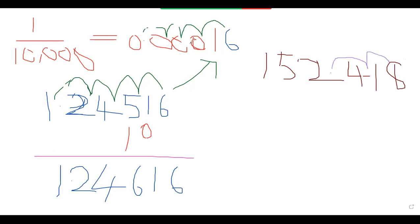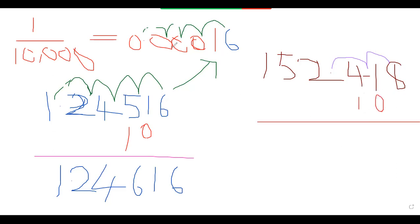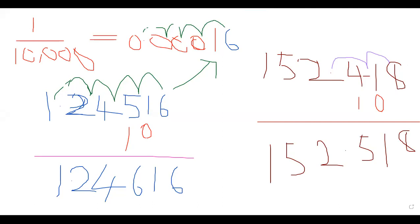Yen pairs are not like the normal rates where we look at the fourth value from the decimals. Yen pairs only look at the second value from the decimals — that's position 1 and 2. So if I add 10 pips to 152.418, that becomes 152.518. I successfully added my 10 pips to this. But if you don't know the basics of this, it's really going to cause a lot of trouble. You have to know the basics of how to add pips to your exchange rates.